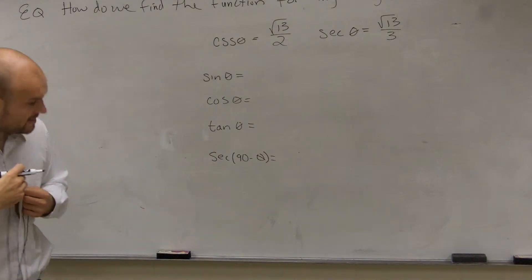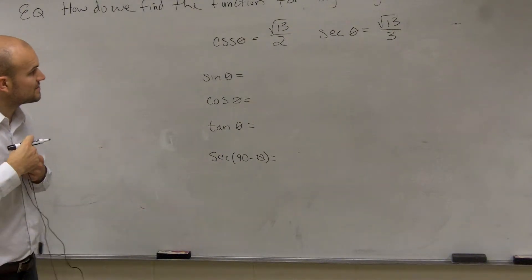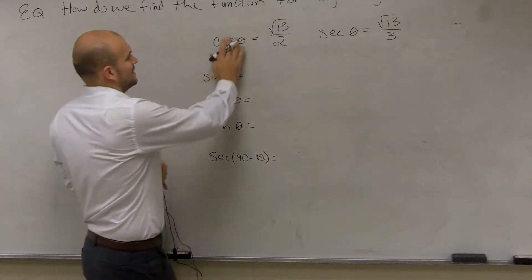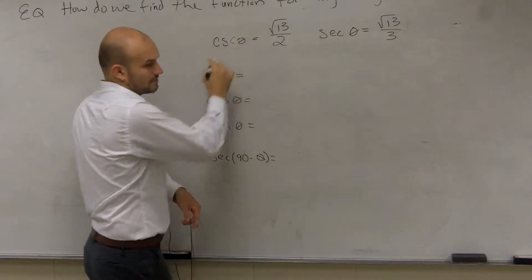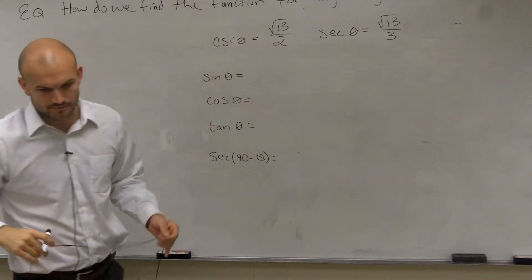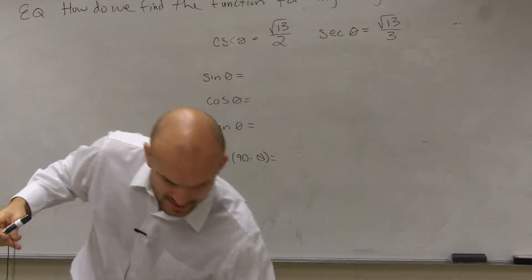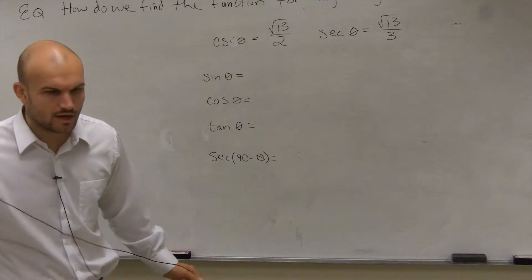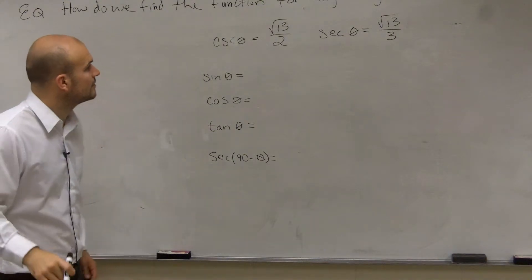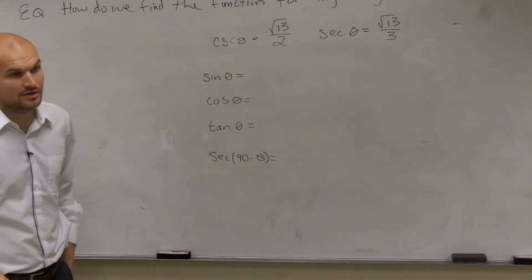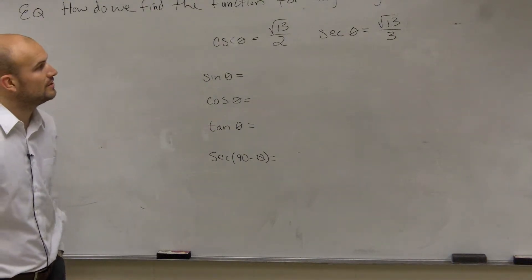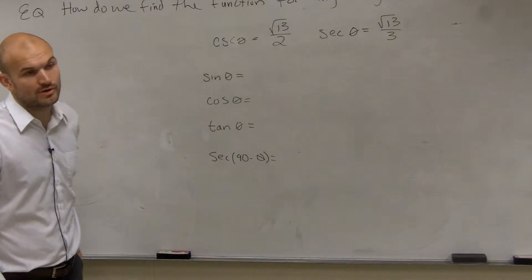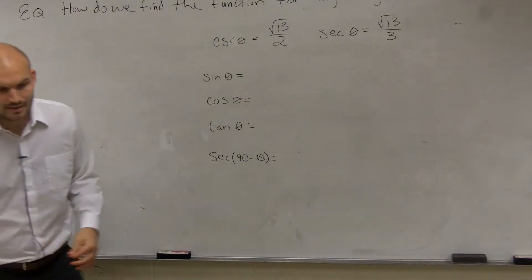What they give us right now: the cosecant of an angle is square root of 13 over 2, and the secant of an angle is square root of 13 over 3.